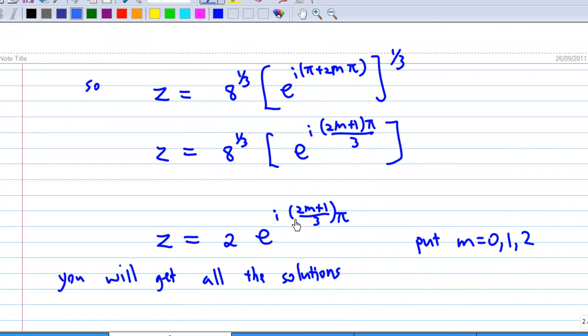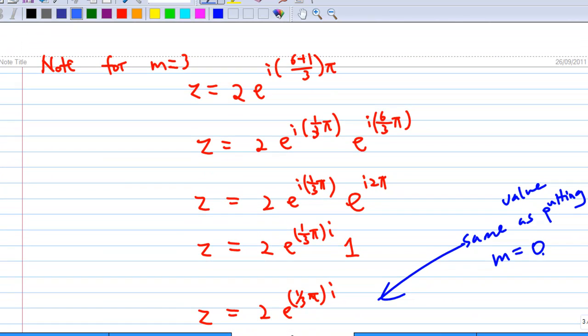Note that for m equal to 3, you'll have 2 times 3 plus 1 which is 7. So you get z equal to 2 e to the i 7 over 3 pi, which is equal to 2 times e to the i 2 pi times e to the i pi over 3. But 6 over 3 is 2, so you get e to the i 2 pi. And e to the i 2 pi is 1. So eventually you'll get z equal to 2 times e to the i one-third pi, which is the same value when you put m equal to 0.